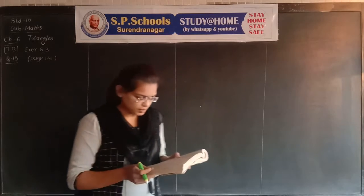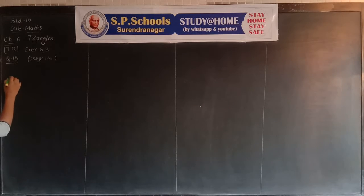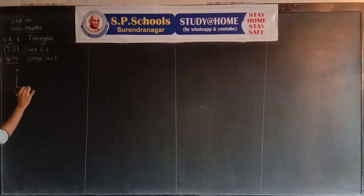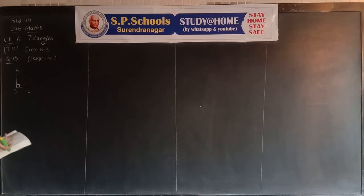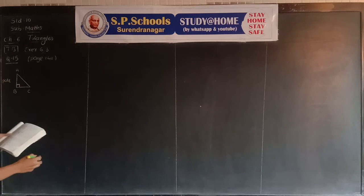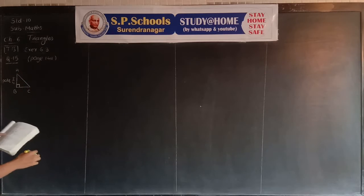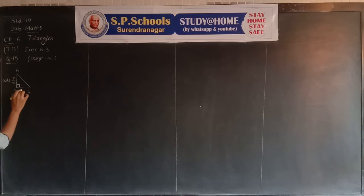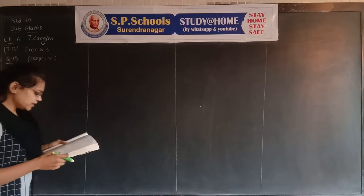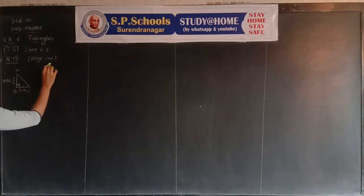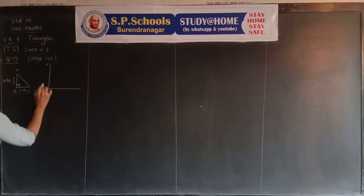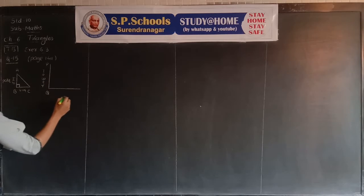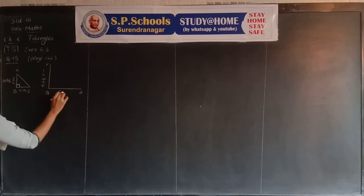We have two things given: one is a pole and another is a tower. We draw one pole where AB represents the pole and BC is the shadow of the pole. AB is vertical to the ground, so AB is perpendicular to BC. AB is the pole of length 6 meters, BC is the shadow of 4 meters. Suppose PQ represents the tower and QR is the shadow of the tower, 28 meters long.